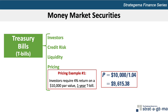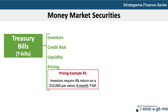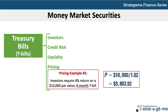To price a T-bill with a maturity shorter than one year, the annualized return can be reduced by a fraction of the year in which the funds will be invested. So if an investor requires a 4% annualized return on a six-month T-bill, this reflects a 2% return over six months. The price they're willing to pay for a T-bill with a par value of $10,000 is $9,803.92.